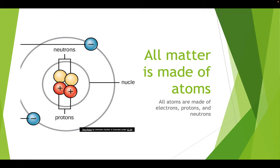Let's move on to matter. All matter is made up of atoms. For this class, it's enough to know that all atoms are made up of electrons — the negatively charged particles that orbit around a positively charged nucleus — and the nucleus is made up of positively charged protons and neutrons, which are neutral. This is sufficient understanding of atomic structure: everything's made up of atoms, and atoms are made up of these three types of particles.